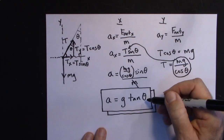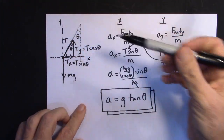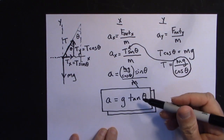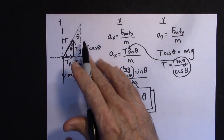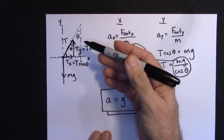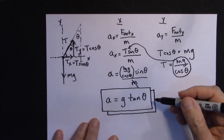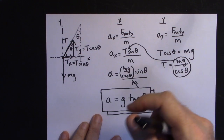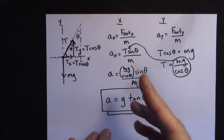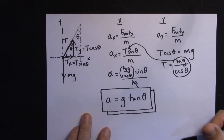Also, the tangent of 90 degrees is infinity, so if the string were completely horizontal with no Y component, you'd have infinite acceleration — which means it can't happen. You always need a little tension in the Y direction to support the weight. As a practical tip: if you're in a vehicle and want to know its acceleration, hang a button from a string. The acceleration equals G times the tangent of the angle it makes with the vertical.